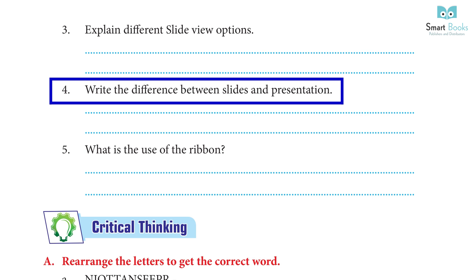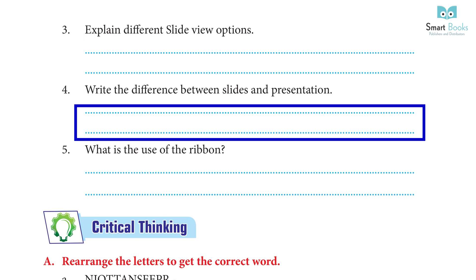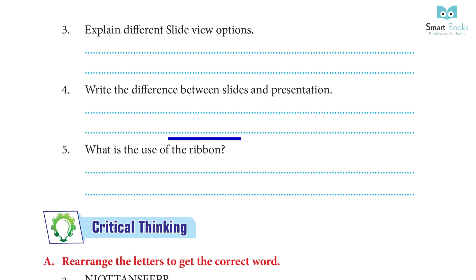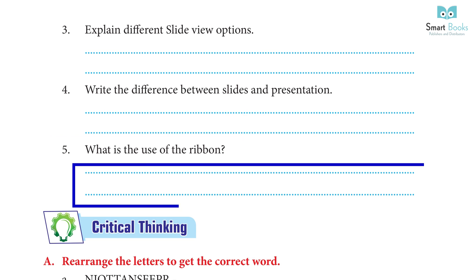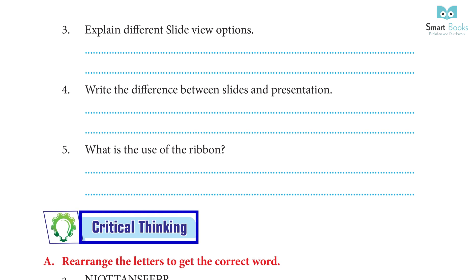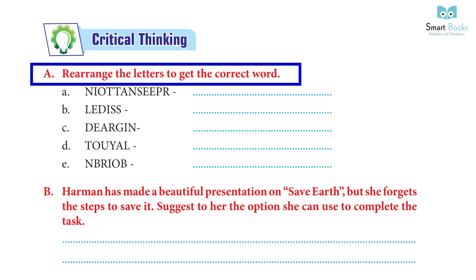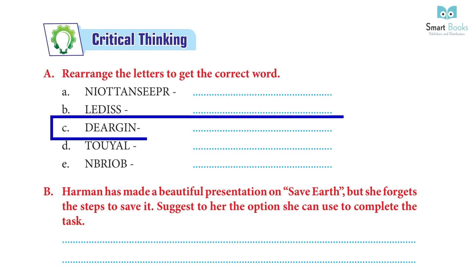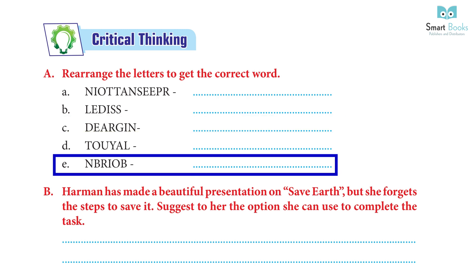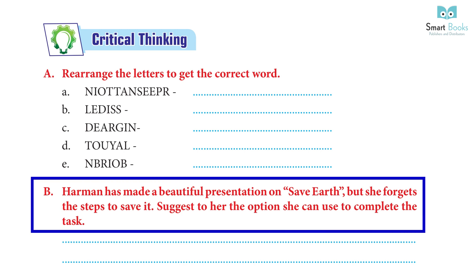4. Difference between slides and presentations: A slide is where information can be placed in the form of text, pictures, sounds, animations, and much more. A presentation is a popular application program that allows you to create and show slides to support it. 5. Use of the Ribbon: A ribbon is made up of tabs and groups, with multiple tabs each containing several groups of commands. Critical Thinking: Rearrange letters — a. Presentation  b. Slides  c. Reading  d. Layout  e. Ribbon.